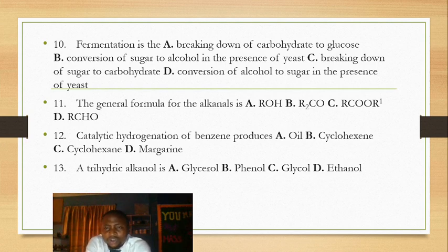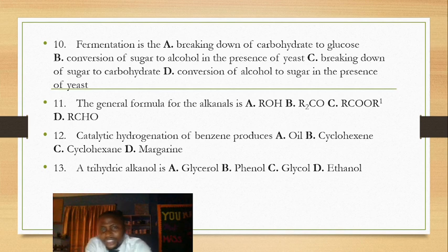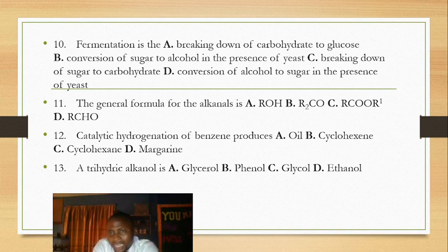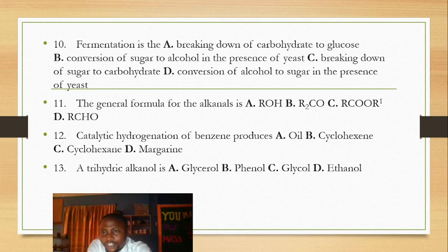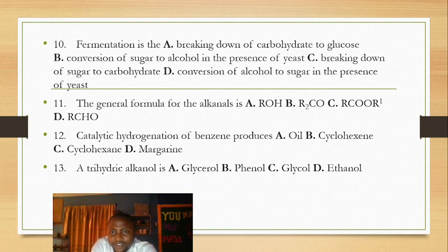The answer is A. For question 11, the general formula for alkanals is R-CHO. Option B — written as R-CO-R — is ketones. Option C is alkanoids written as R-COO-R. So D is the answer. Question 12: catalytic hydrogenation of benzene reduces the unsaturation level of benzene; the answer is cyclohexane, and B and C are also correct.